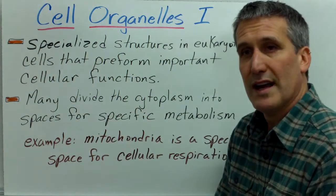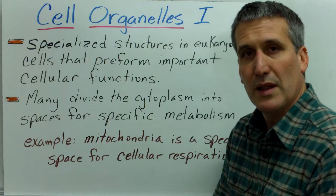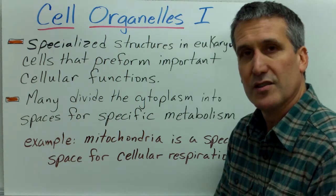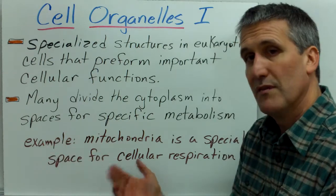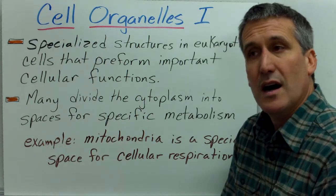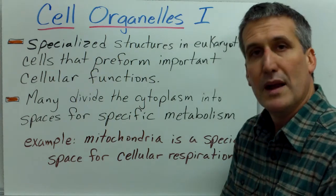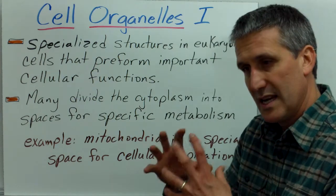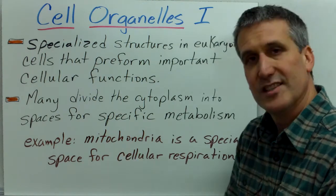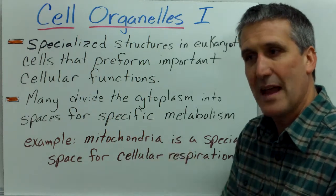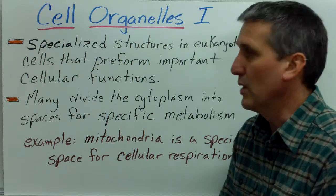Many of these organelles are membrane organelles, which divide the cytoplasm into specific areas so that specific metabolic reactions can occur. An example of that is the mitochondria. A mitochondrion is a double membrane organelle which has a special set of metabolic reactions — in this case cellular respiration — happening in that specific organelle in the cytoplasm.